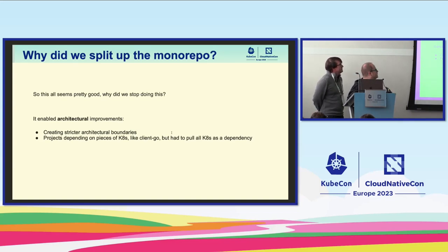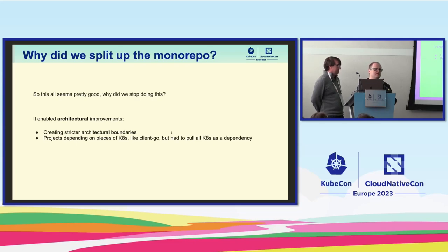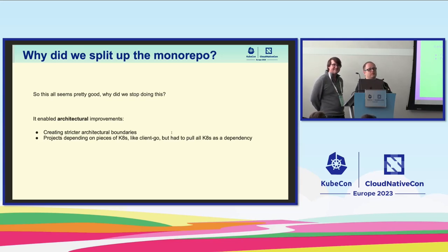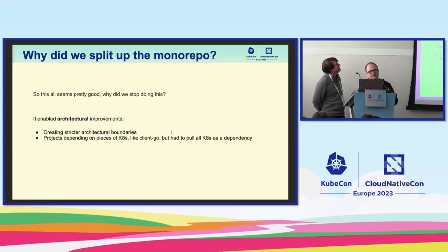Why did we stop doing this? It enabled us to do a lot of architectural improvements, so things are not depending as much on a single person. Also, projects that use various pieces of Kubernetes could just source those components, instead of having a big dependency on Kubernetes that conflicted with other dependencies that don't upgrade at the same time.